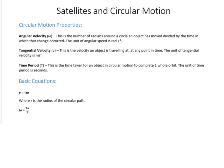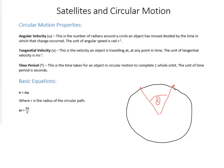To start off, there are a few properties we need to know. The first is angular velocity — when an object is moving in a circle, angular velocity is the number of radians it travels divided by the time it takes. If we sketch a circle and draw two radii, and the object starts at one position and moves to another through angle theta, the angular speed is that angle divided by the time it took.